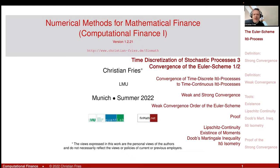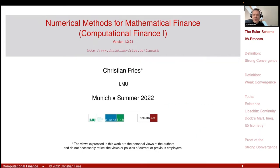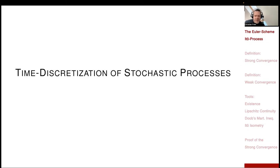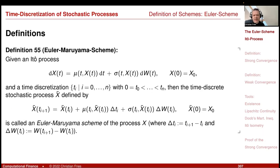Good morning. Welcome to Numerical Methods for Mathematical Finance. We started a section on time discretization of stochastic processes — that is, we have a time-continuous Ito stochastic process and from it we generate approximations that are random variables at a given time discretization. The most prominent and useful scheme is the Euler scheme.